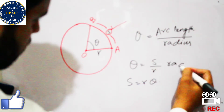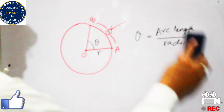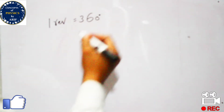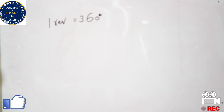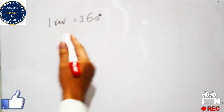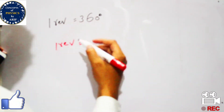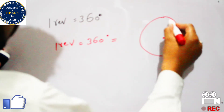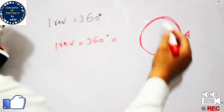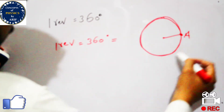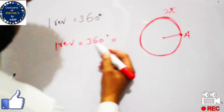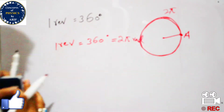We need to calculate the relationship between revolution, degree, and radian. We know that one revolution is 360 degrees. When a body covers a complete circular path and returns to its initial point, it covers 2π in terms of radians. Therefore, 360 degrees is equal to 2π radians.